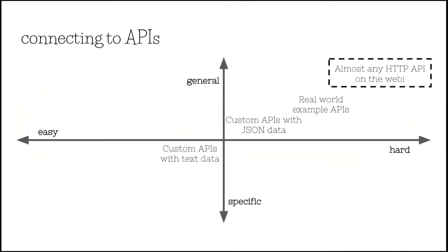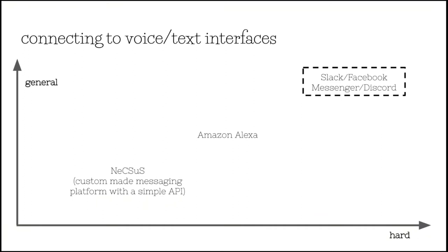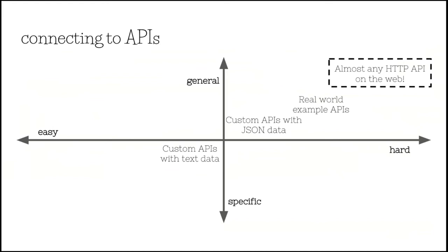For instance, the voice and text interface APIs — the ones that connect to Facebook Messenger, Slack, or Amazon Alexa — they're a bit more complicated, because you needed to know how to create your own web server that could respond to the requests they made to you.